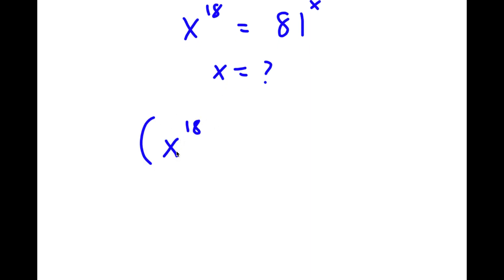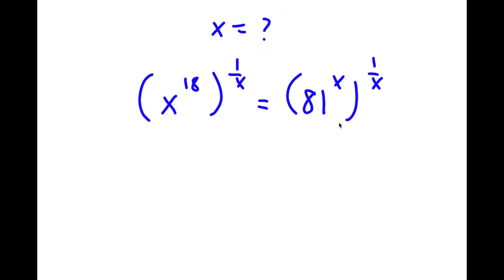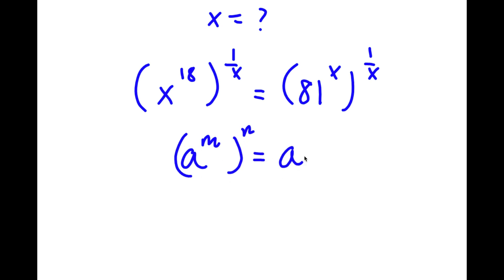So now I have x to the power of 18 to the power of 1 over x, is equal to 81 to the power of x to the power of 1 over x. Now if I have something in the form a to the power of m to the power of n, this is equal to a to the power of m times n.